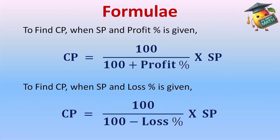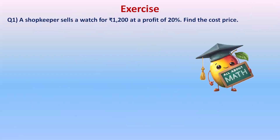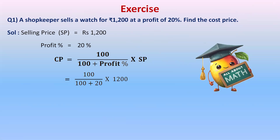Let's do some exercises. A shopkeeper sells a watch for ₹1,200 at a profit of 20%. Find the cost price. 'Sells' means the selling price is ₹1,200 and profit percent is 20%. We have to find the cost price. The formula — since profit percent is given, addition will be in the denominator: Cost Price = (100 / (100 + Profit%)) × Selling Price.